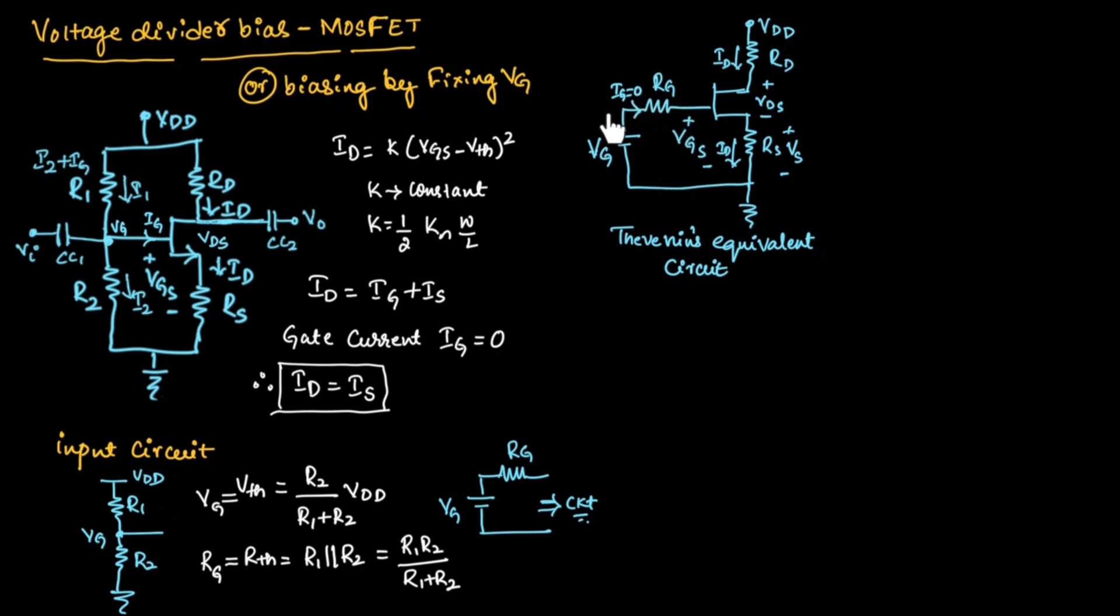At the input side, instead of connecting resistors R1 and R2, we have simplified and we have written Vg and Rg which is equal to these values. Here Ig is assumed to be 0. So we will keep the output side as it is.